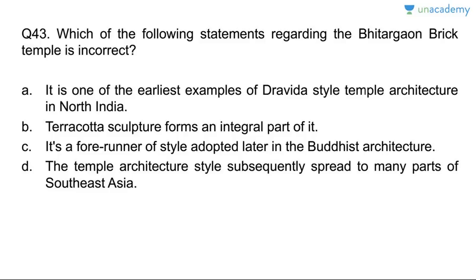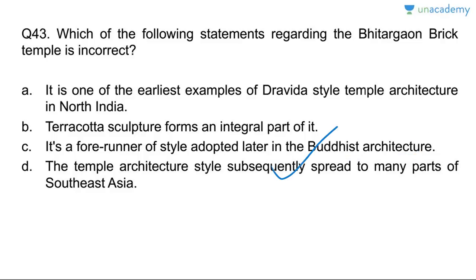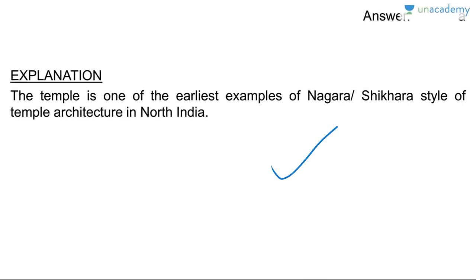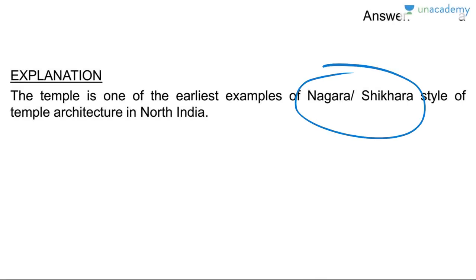Question forty-three: which statement about the Bhitargaon brick temple is incorrect? It is one of the earliest examples of Dravidian style — wrong; it is a typical example of the Nagara or Shikhara style of temple architecture in north India. Terra cotta use is correct. The forerunner style of Buddhist character architecture is correct. The temple architecture style spreading to southeast Asia is also correct. Answer: the incorrect statement is that it is an example of Nagara or Shikhara style.